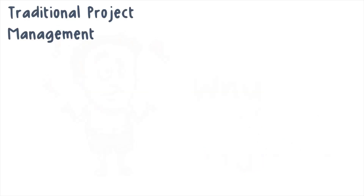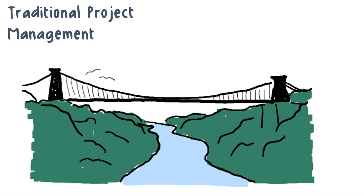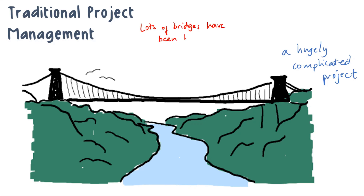Let's imagine that we're building a bridge. Clearly, this is a hugely complicated scenario — a massive undertaking requiring experts to analyse and design what we need, many different people and project phases, and it's going to cost millions. But even though it is indeed complicated, the laws of physics and engineering haven't changed for hundreds of years. There are a lot of established best practices we can draw on, and many, many different bridges have already been built all over the world.